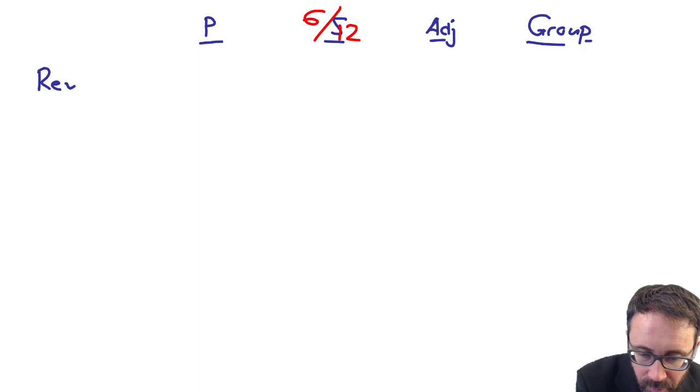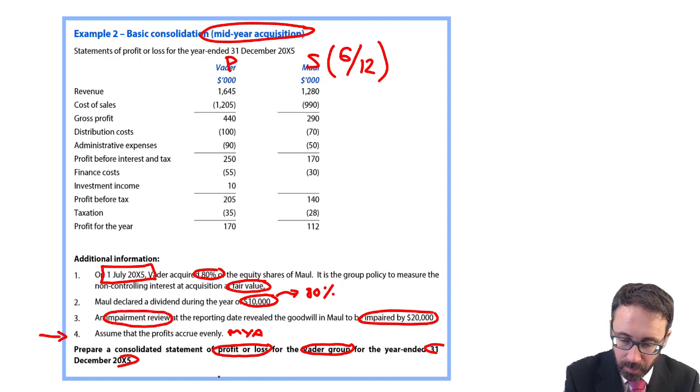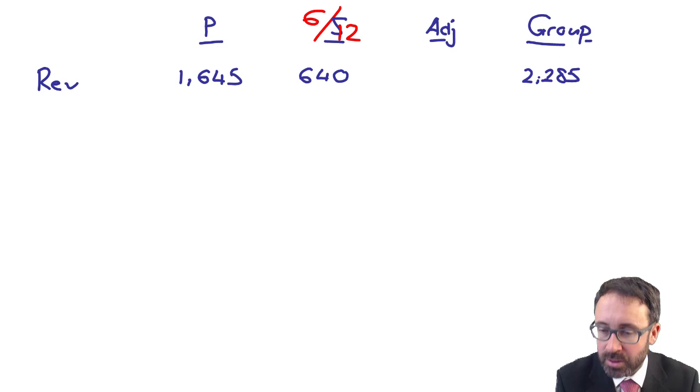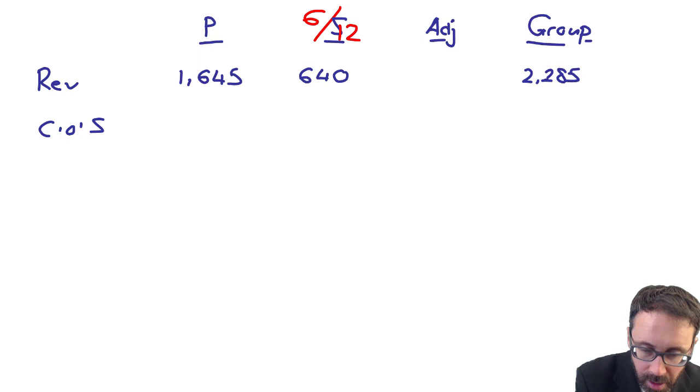If we go through and look at the revenue, the revenue of P is 1.645. That of the subsidiary is 1.280, but we need to prorate that by six-twelfths. Does that give me 640? There are no intra-company sales. There's no provisions for unrealized profit. So there's no adjustment there. So when I add across, does that give me 2.285?